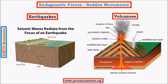In earthquakes we see faulting, whereas in mountain building we see folding. Imagine three blocks of landform: if two blocks move away from each other, the block in between slides towards the bottom — this is a normal fault. When the two blocks are pushed toward each other, the middle block is uplifted — this is a reverse fault. When two blocks move horizontally with respect to each other, it is called a transcurrent fault.